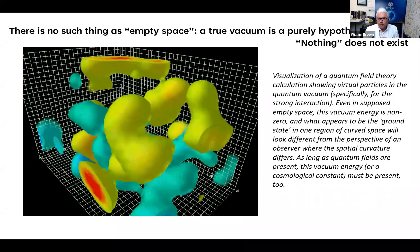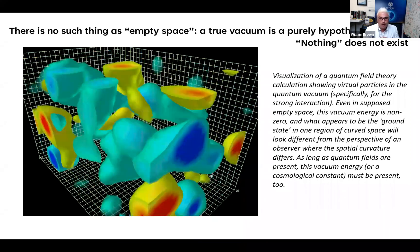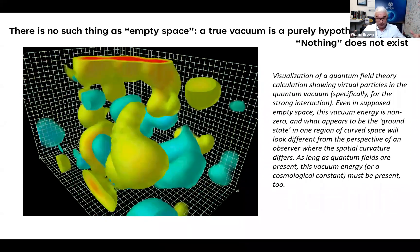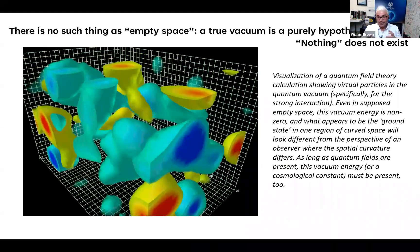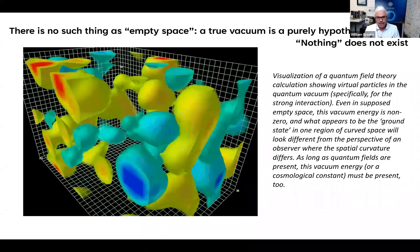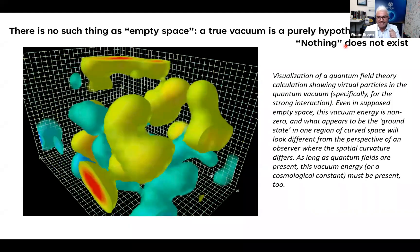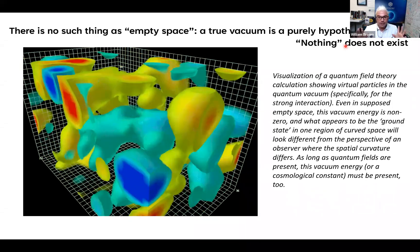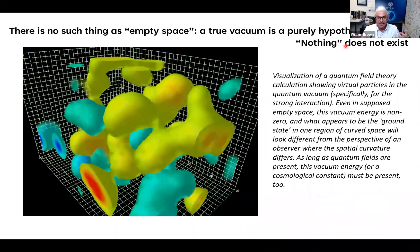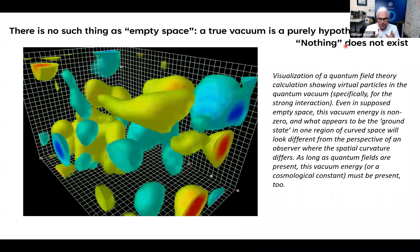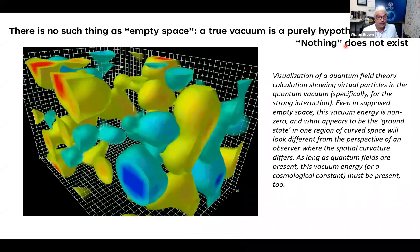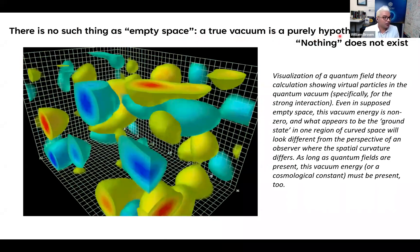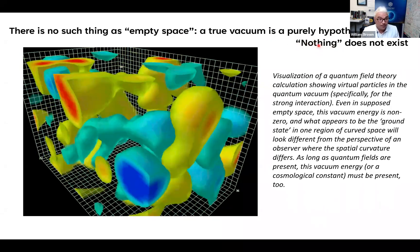Quantum vacuum fluctuations are also known as the zero-point energy density of the vacuum. There's a hypothetical state of space referred to in physics as the vacuum, the vacuum state. The idea of the vacuum is a completely empty space devoid of any matter, energy, or forces. This state is hypothetical because it does not exist anywhere in nature. The reason for this is that the very fabric of the universe, space itself, is a substantive medium, a veritable limitless sea of energy. And this indelible and substantive field is the source energy for all matter and forces in the universe. There is no such thing as empty space. A true vacuum is a purely hypothetical state. Nothing does not exist.